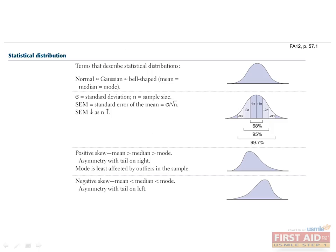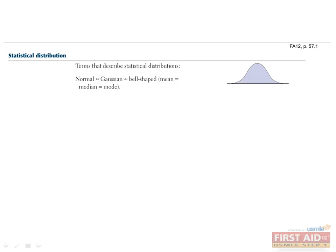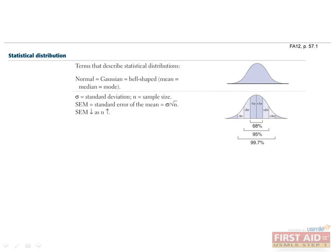Now we will discuss various terms that are used to describe statistical distributions. The normal or Gaussian statistical distribution is bell-shaped and the mean, median, and mode are all equal. The standard deviation, denoted by the lowercase Greek letter sigma, describes the spread of the data about the mean. As shown in this diagram, for normally distributed data, 68% of the data falls within one standard deviation of the mean. 95% of the data falls within two standard deviations of the mean, and 99.7% of the data falls within three standard deviations of the mean.